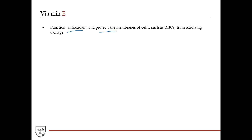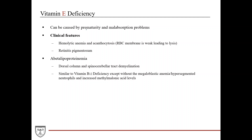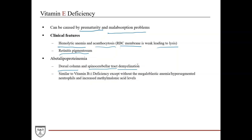The last fat-soluble vitamin is vitamin E, which acts as an antioxidant and protects cell membranes — such as red blood cell membranes — from oxidative damage. Vitamin E deficiency is rare but can occur with premature birth or any disorder causing fat malabsorption. Clinical features include hemolytic anemia and acanthocytosis, resulting from weakening of the red blood cell membrane leading to lysis. Retinitis pigmentosa can also be seen. In abetalipoproteinemia — a disorder where patients have difficulty absorbing fats — vitamin E deficiency can develop.